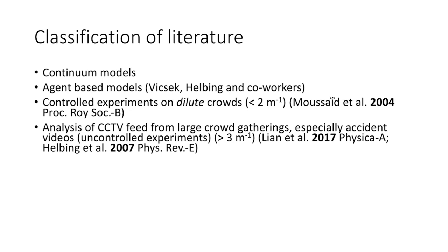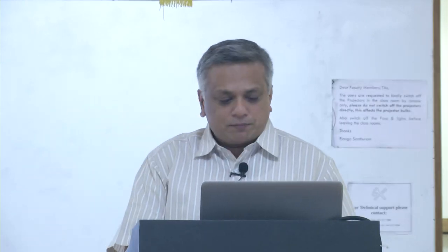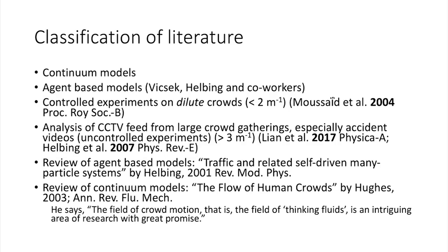There is also analysis of CCTV feed from large crowd gatherings, especially accident videos. Physica A and D have a large body of literature analyzing accident videos from a physics perspective. These are typically at densities of at least 3, if not approaching 5 or 6 people per square meter, but these are uncontrolled experiments and the CCTV cameras are not placed to get quantitatively accurate data. This becomes a big bottleneck — experiments cannot be done at the scale we envision in any meaningful way. Two really nice reviews from the early 2000s set the ball rolling in both continuum and agent-based model directions.